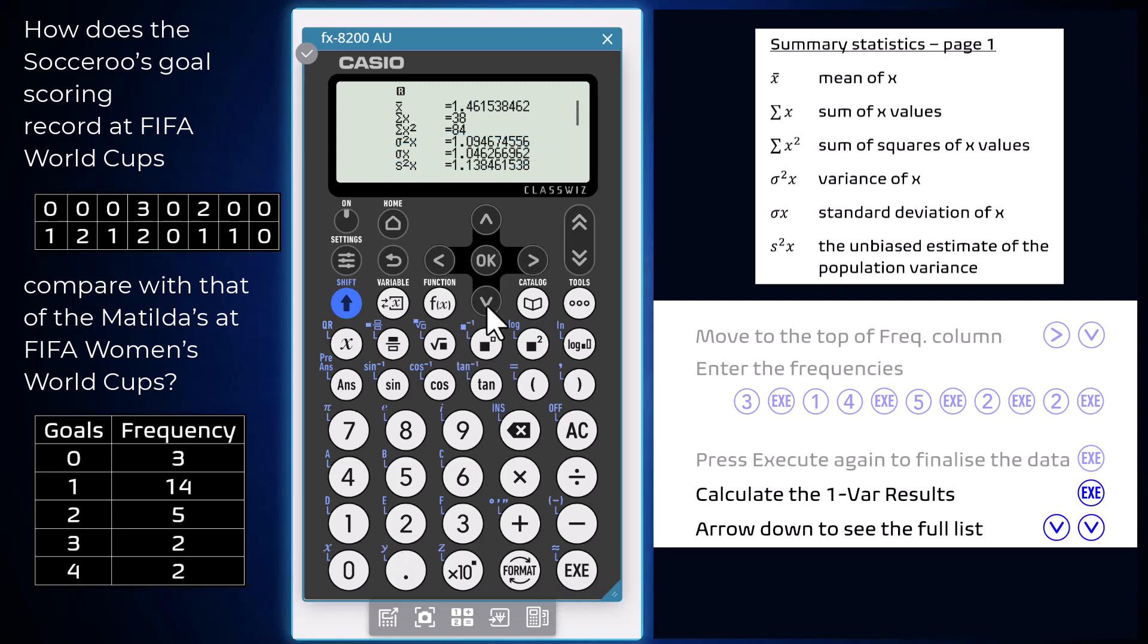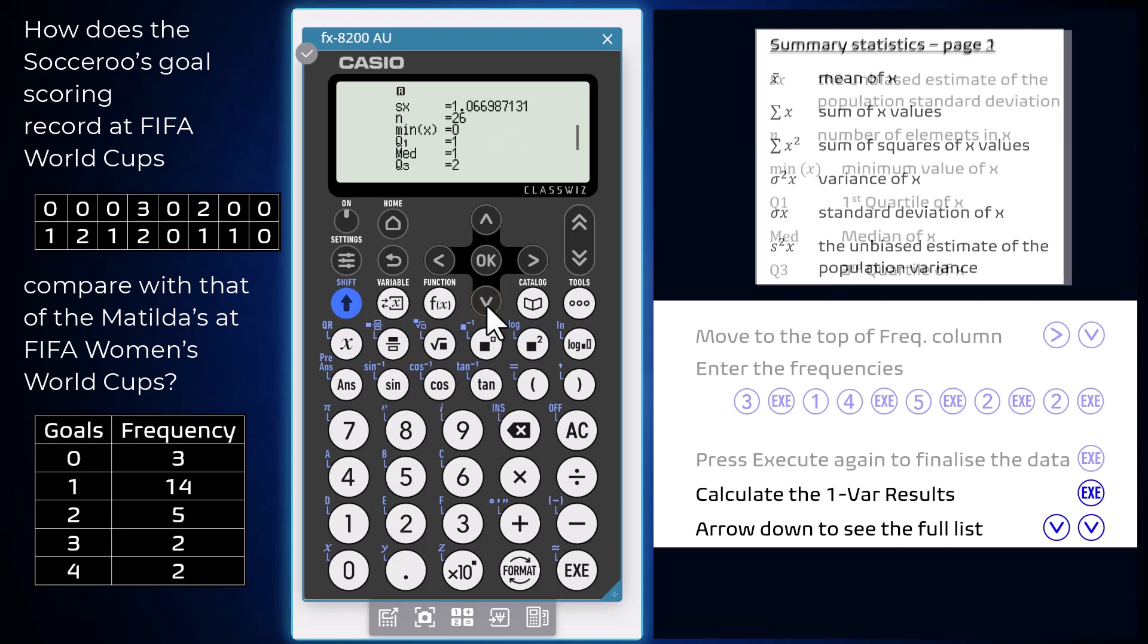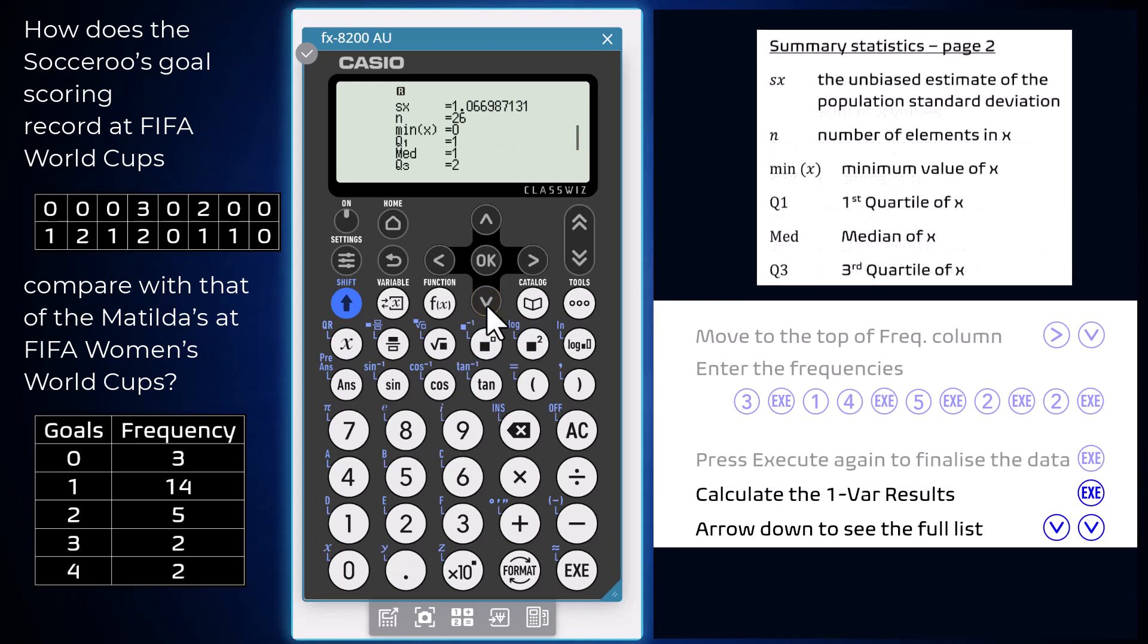By arrowing down, another page of summary statistics is shown. This includes numbers commonly associated with the five number summary, including the minimum, Q1 the first quartile, the median, and Q3 the third quartile. To complete that five number summary, arrow down once more to see the data set's maximum.